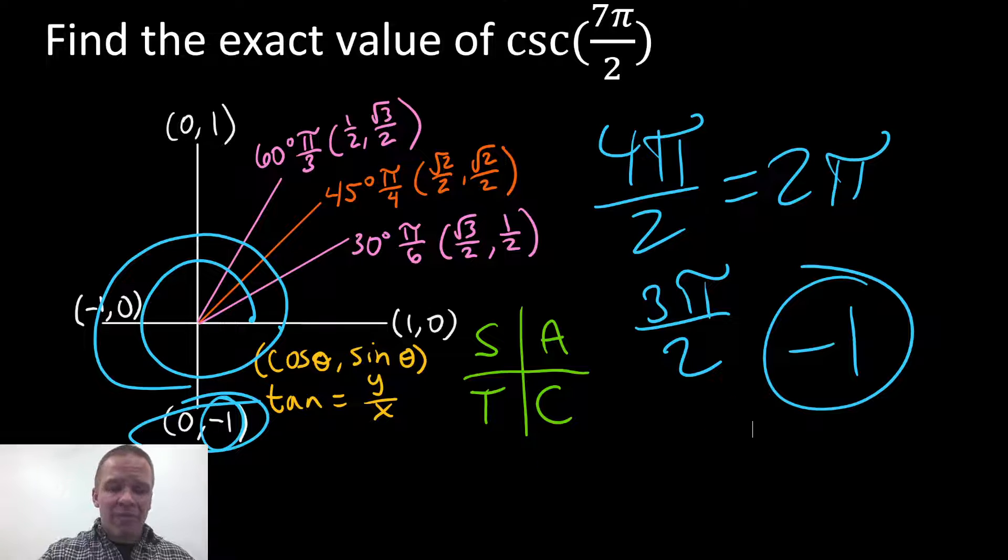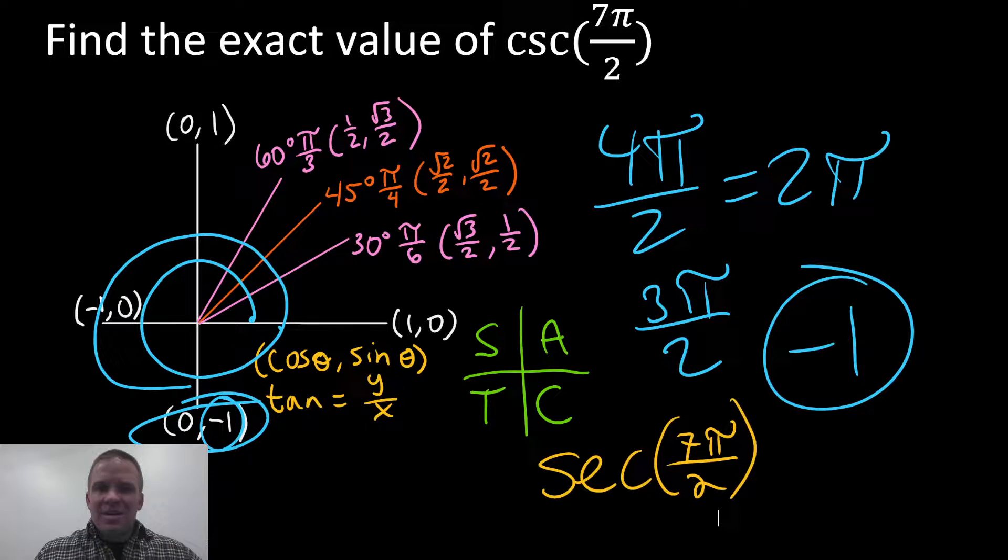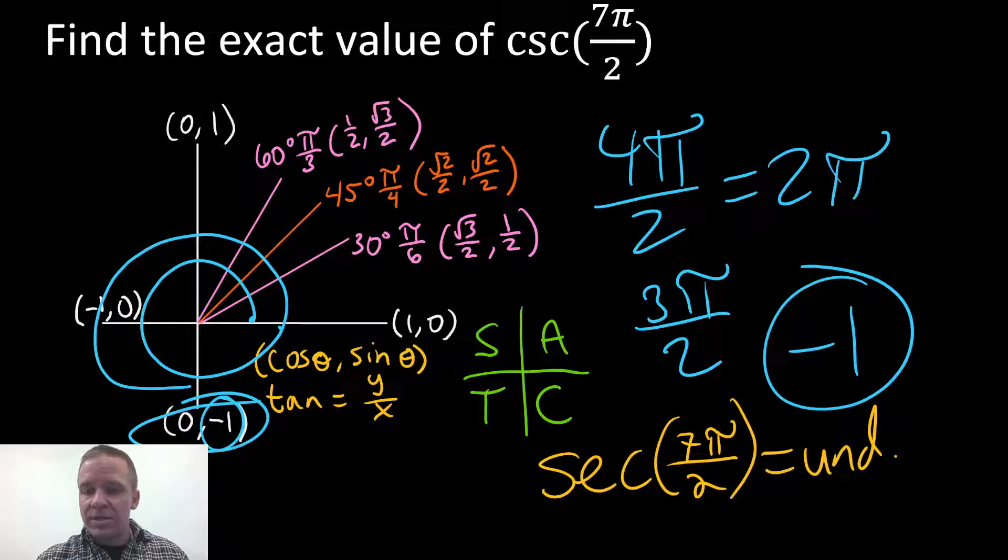Quick question, what if I asked you for the secant of seven pi over two? That's a good question there because that's gonna be my zero value, isn't it? That's gonna be the X value, but the reciprocal of that. Well, what's the reciprocal of zero? It's gonna be something over zero, which is gonna be undefined here, right?